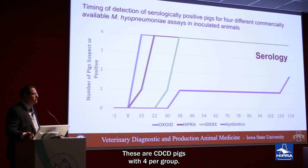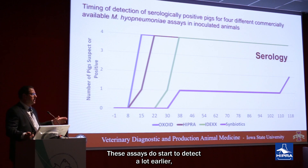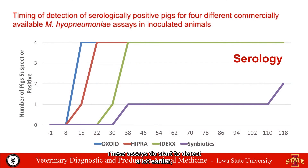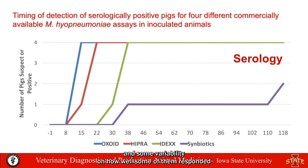These are CDCD pigs and we had just four pigs per group. These assays do start to detect positives a lot earlier — by day eight we started to get some positives. There was a little variability in how well some of them responded, or how quickly they turned seropositive.